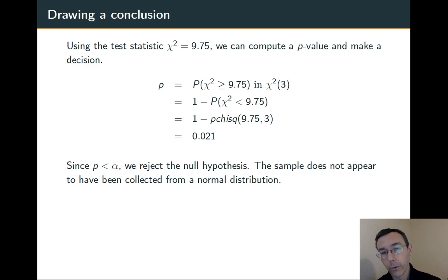We're going to be in chi-squared of three. We had two parameters that we had to estimate using sample data, and we lose another degree of freedom just whenever we do this chi-squared test. So we're looking for the probability of randomly getting a chi-squared value greater than or equal to 9.75 in chi-squared of three. We subtract from one so that we can use CDF for the chi-squared distribution.